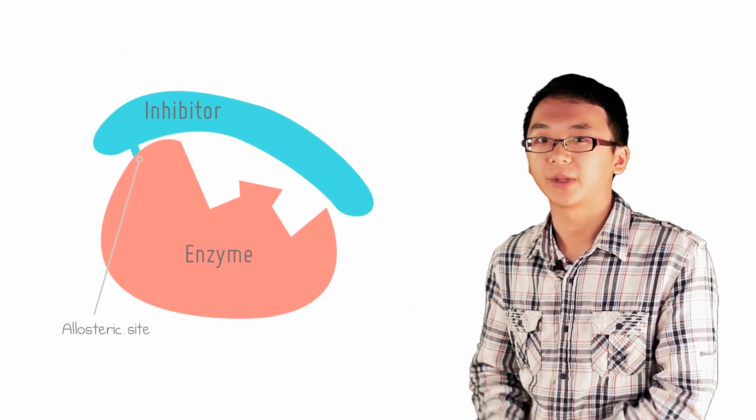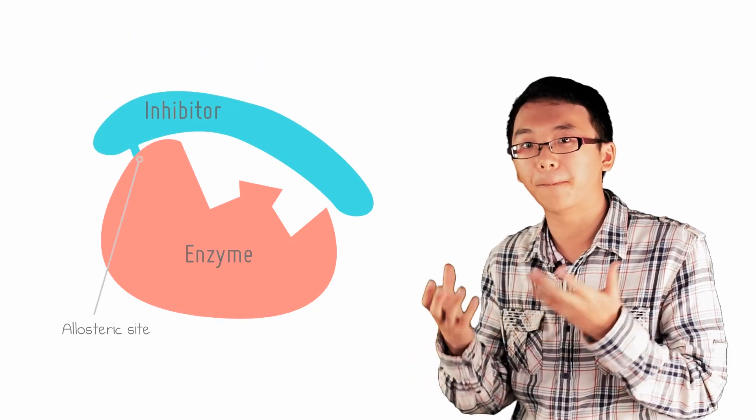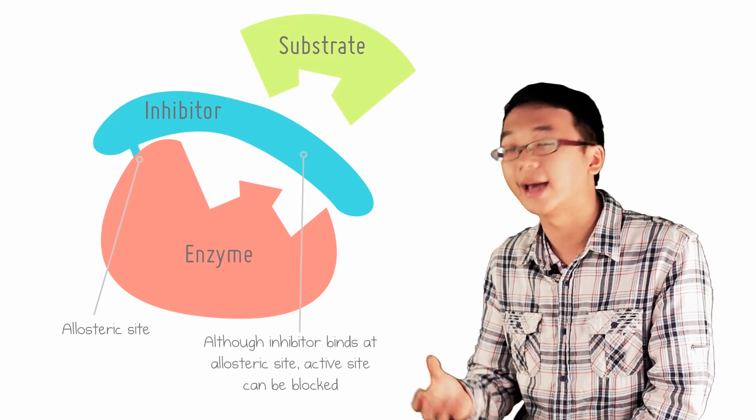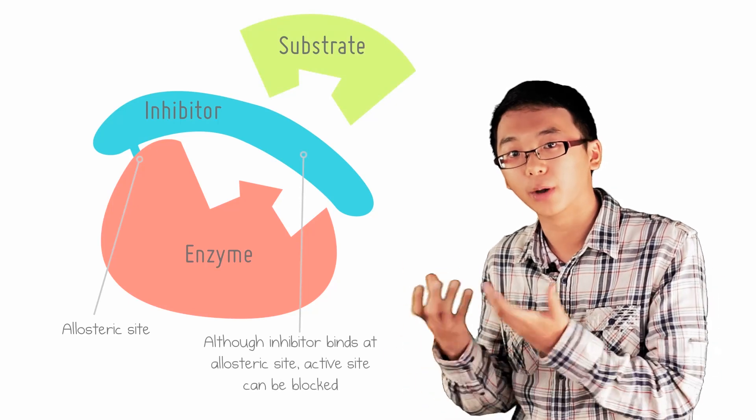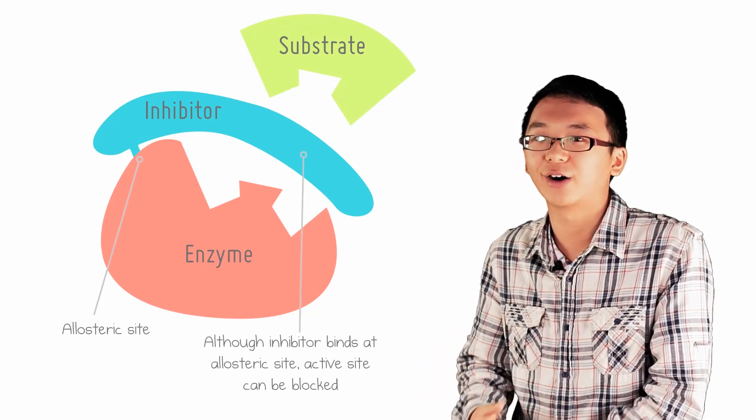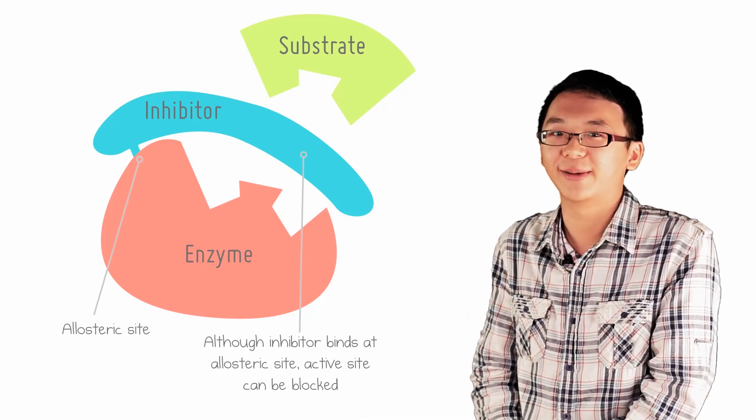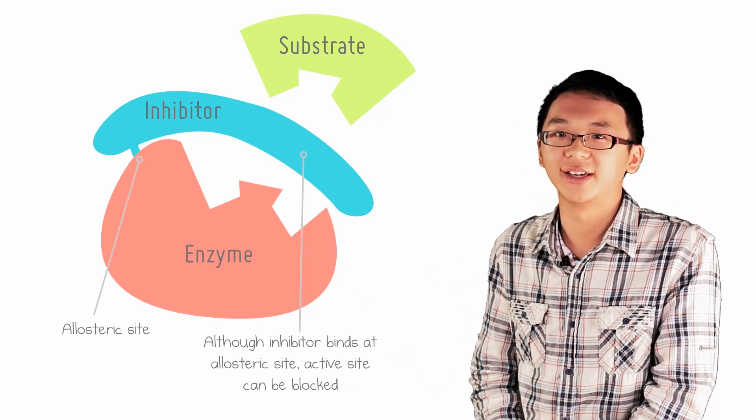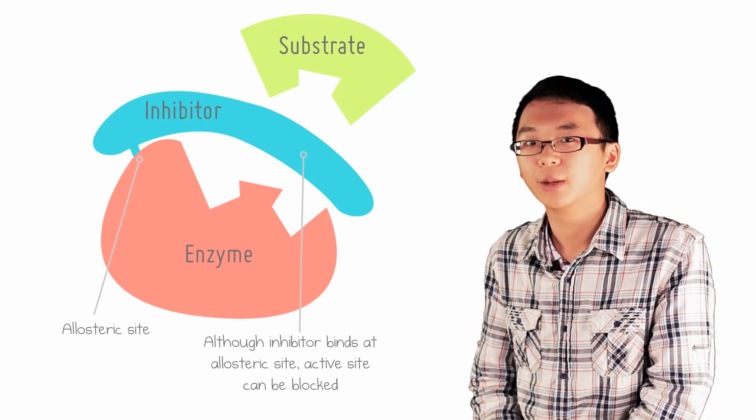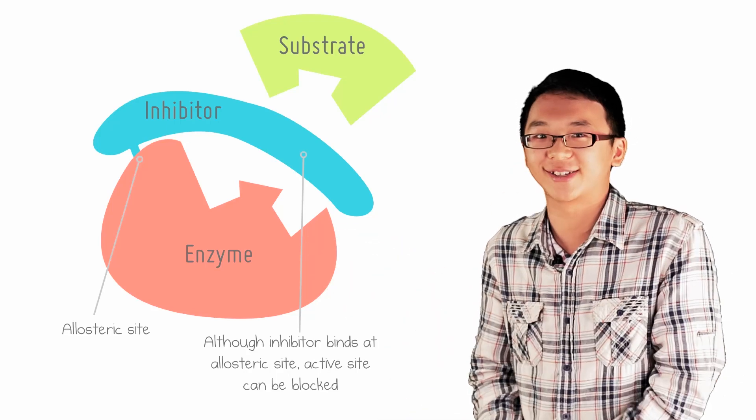This can be easily achieved if I have an inhibitor that is so big that even though it binds at the allosteric site, it can block the active site. It's just like how there are many ways to prevent someone else from sitting on your chair—either by sitting on it yourself or, in the case of allosteric inhibition, putting a barrier around your chair so no one else can sit on it.